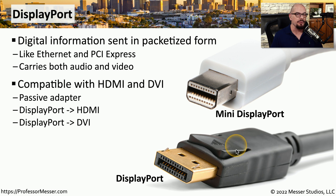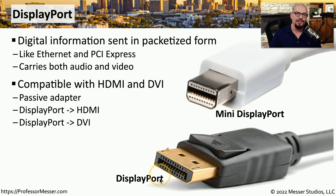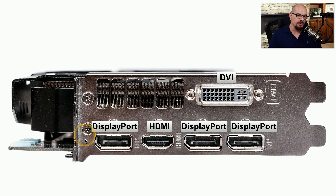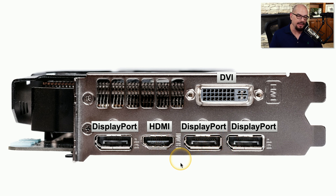DisplayPort is also passively compatible with HDMI. So if you have a computer with a DisplayPort interface and a monitor with an HDMI interface, you simply need a cable that has DisplayPort on one side and HDMI on the other, and the compatibility between those two allows them to work perfectly. Here's a video adapter that has an HDMI output and DisplayPort outputs as well. You can see that the DisplayPort interfaces are shaped to be slightly different than the HDMI.